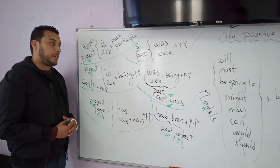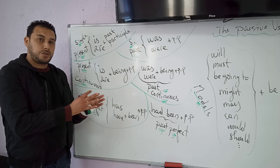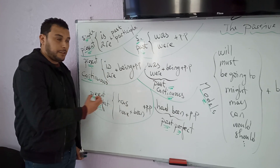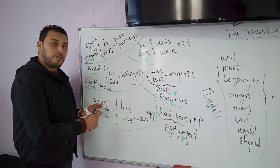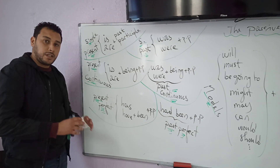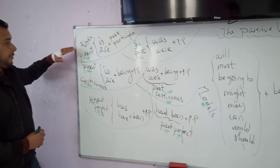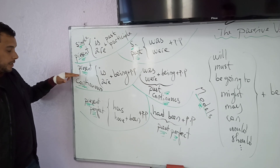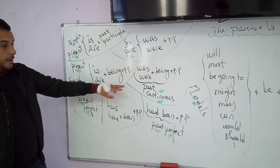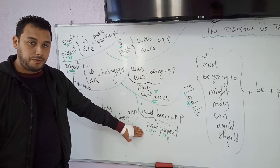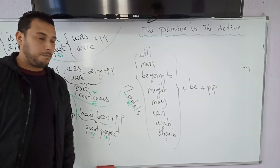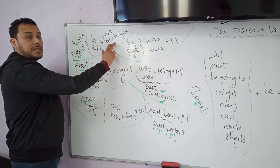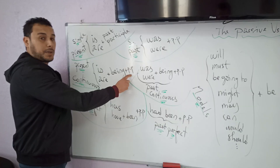As previously mentioned, to switch from the active voice to the passive voice, we must conjugate verb 'to be' in the same tense as the main verb. Here I have a list of verb 'to be' in most of the tenses students are concerned with this year: simple present, simple past, present continuous, present perfect, past continuous, and past perfect, along with a list of modals. They are all plus past participle.